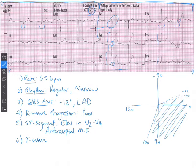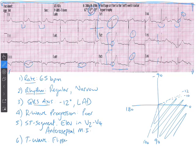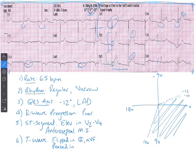Step six is T waves. Looking from left to right, we've got some peaked T waves in V2, V3, and V4, which are our problem leads. We've also got some flipped T waves in lead III and aVF. So we'll note flipped T waves in III and aVF, and peaked T waves in V2 through V4.